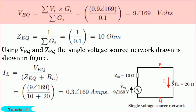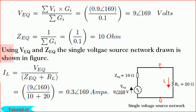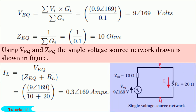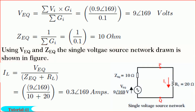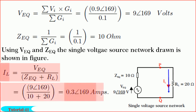Z-equivalent is equal to 1 divided by summation of G_i, which is 1 divided by 0.1, giving us 10 ohm. V-equivalent is equal to summation of V_i·G_i divided by summation of G_i. By substituting the values, we get V-equivalent is equal to 9∠169 volts. Using V-equivalent and Z-equivalent, the current in the load resistance RL is I_L equal to V-equivalent divided by Z-equivalent plus R_L, and by substituting the values we get I_L is equal to 0.3∠169 amperes.